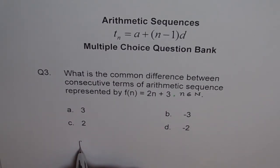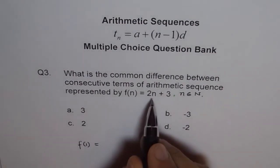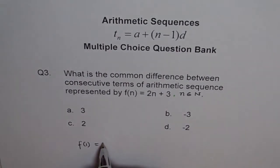So if I write f of 1, f of 1 is equal to 2 times 1 is 2, 2 plus 3 is 5. And f of 2 will be 2 times 2, 4, 4 plus 3 is 7.